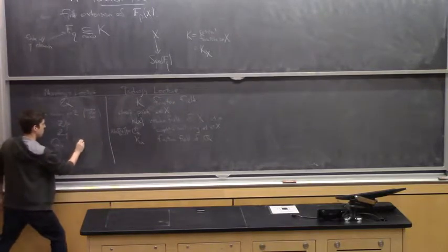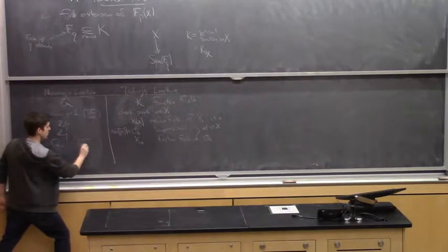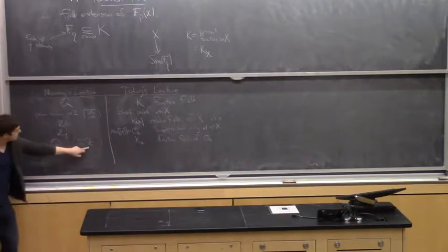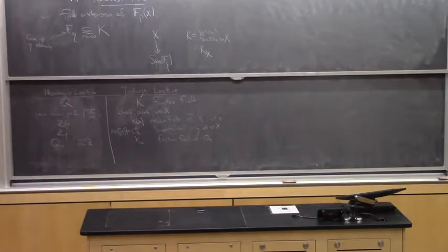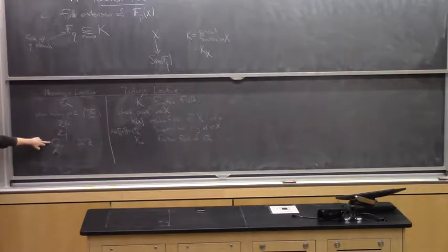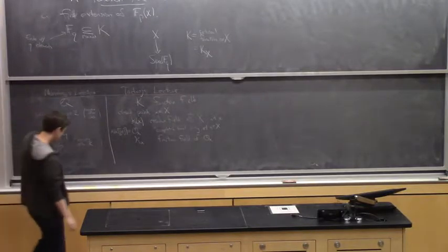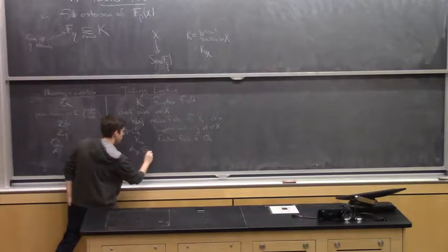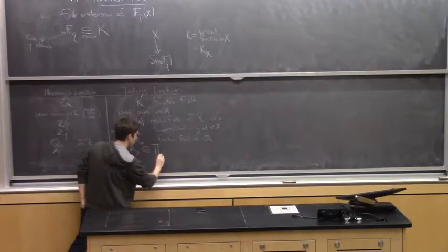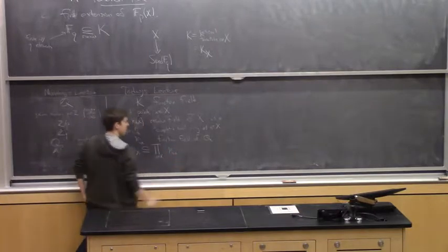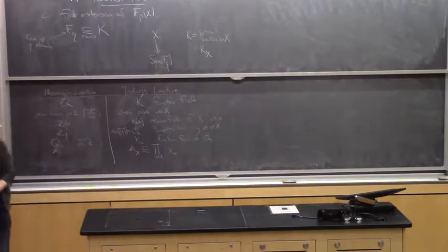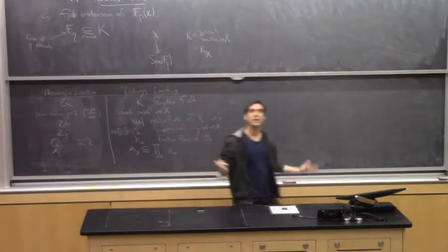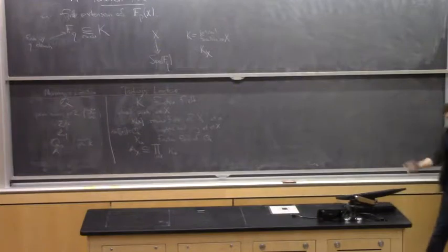There's also k_x, the fraction field of O_x. The analog in Monday's lecture is the field Q_p of p-adic rational numbers, and also the Archimedean completion of the rational numbers. Finally, in Monday's lecture we had the ring of adeles, which is roughly what you get by multiplying together all completions of Q at various places. Similarly, there's an object called the adeles of X, defined as a restricted product over all closed points of the local field k_x, where you only allow denominators at finitely many places.